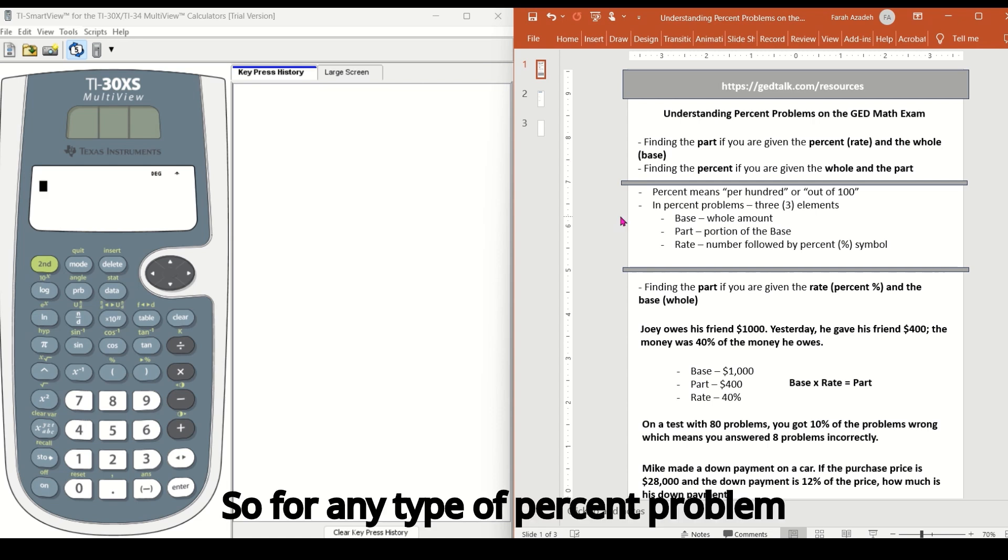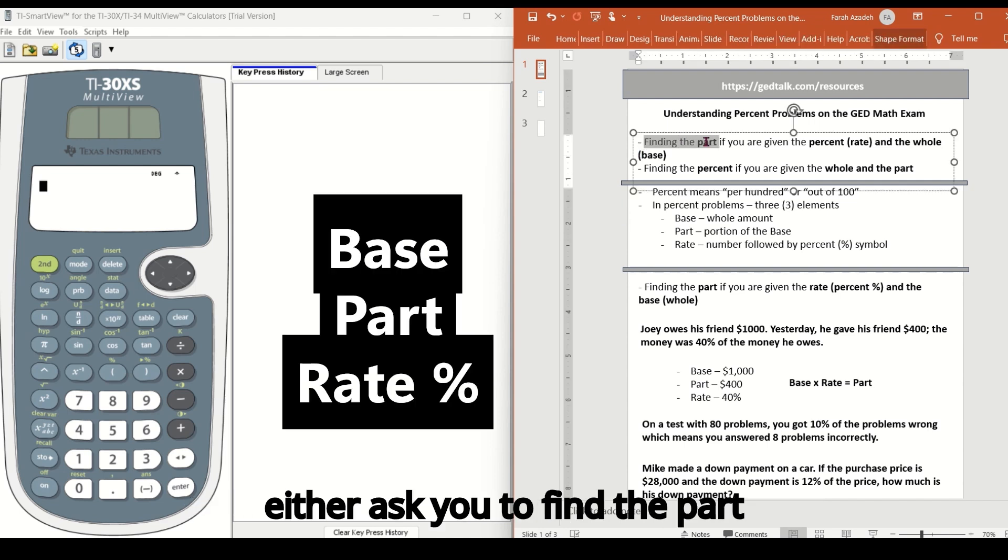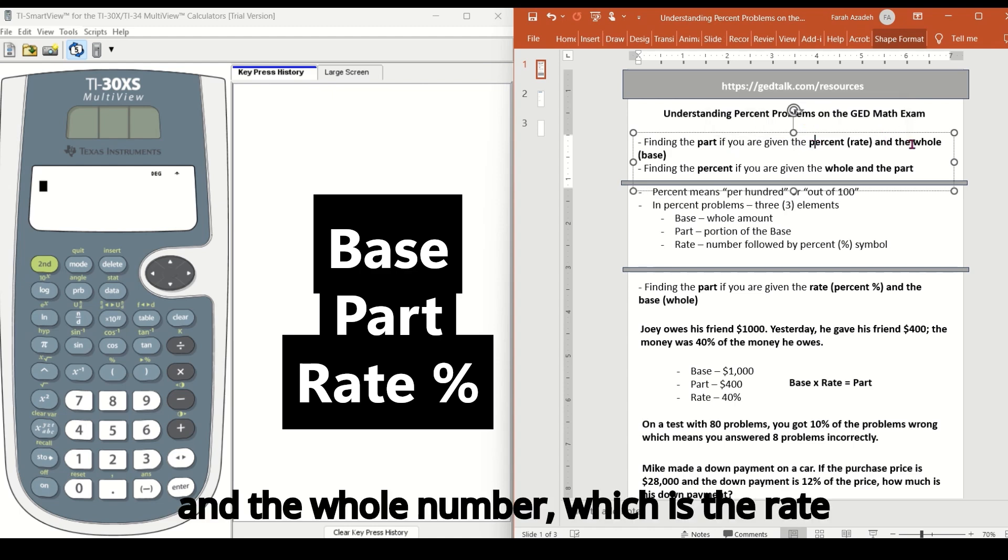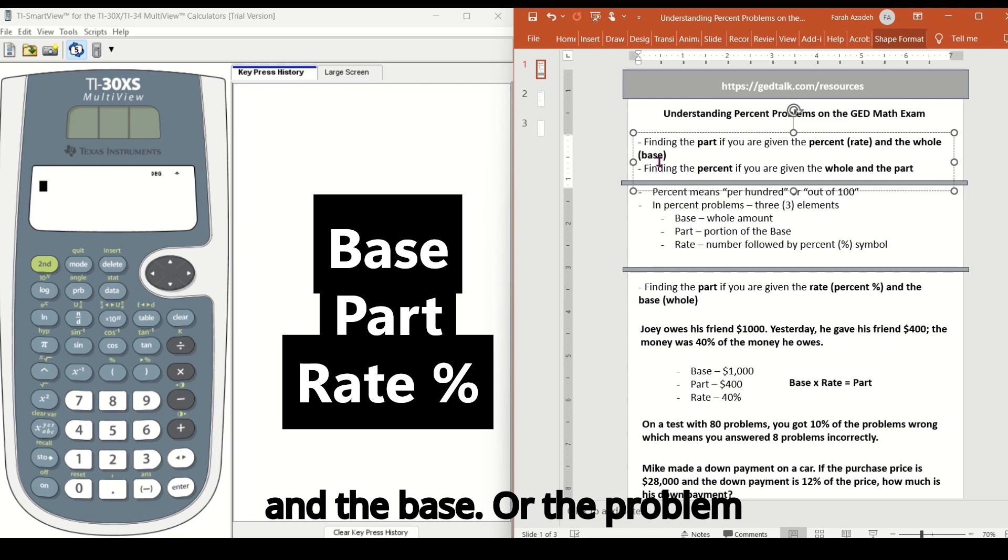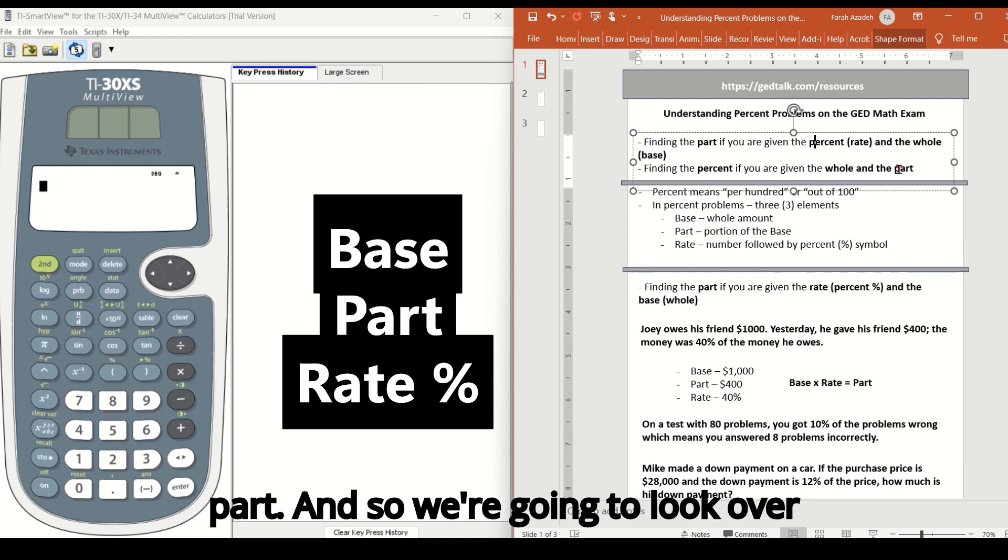So for any type of percent problem on the GED math exam, they're going to either ask you to find the part and they're going to give you the percent and the whole number, which is the rate and the base. Or the problem might ask you to find the percent and they'll give you the whole number and the part. And so we're going to look over both of those types of problems that you'll see.